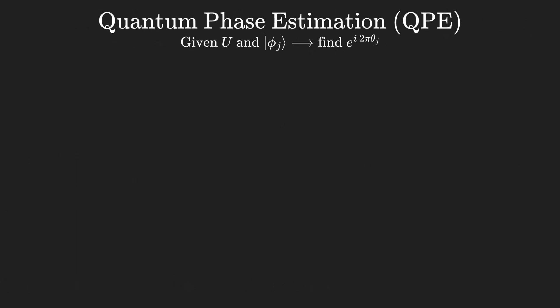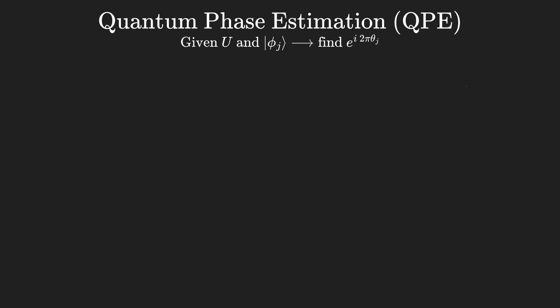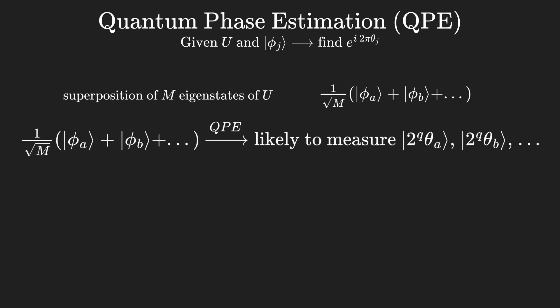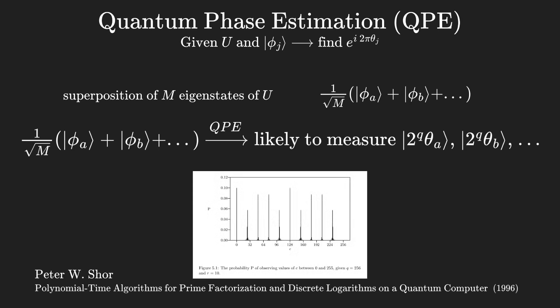There is a special case we need to discuss, where the bottom register is not initialized with a pure eigenstate, but with a uniform superposition of m eigenstates of the quantum gate. In this case, the most likely values to measure are the closest integers to the power-of-two factor times the eigenvalue argument for each present eigenstate. The resulting probability distribution now consists of several spikes around the values. This graph is actually from Shor's original paper, where the algorithm is described in a different way, but consists of the same underlying math.